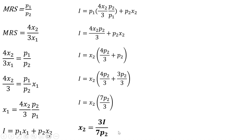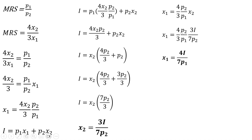Now let's get the demand for Good 1. We have the result for x subscript 1 which still contains x subscript 2, so we replace that with 3I divided by 7P subscript 2. Making that substitution, the price of Good 2 terms cancel and the 3s cancel, leaving us with the demand for Good 1. And that is it.